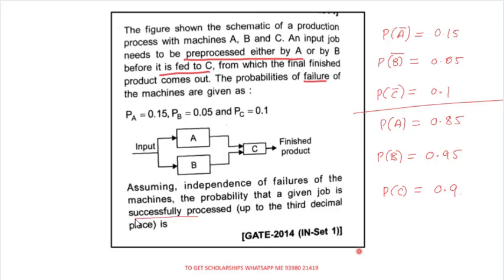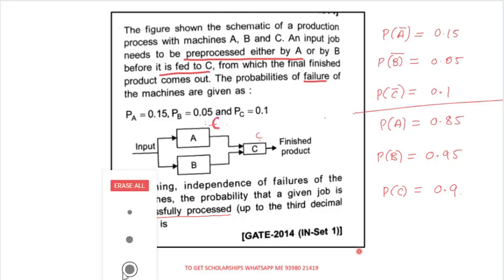Now, what they are asking is the probability that the given job is successfully processed. If A fails and B succeeds, the product becomes a fail. For the job to be successfully processed, we need the correct result — not a failure. If A fails and B also succeeds, the final product is still failed. So for success, the processing path must succeed.